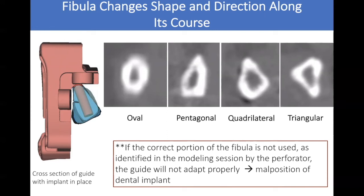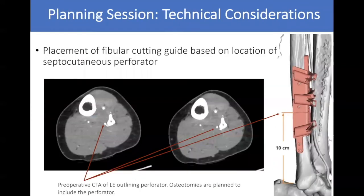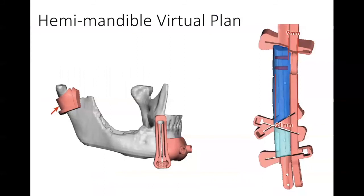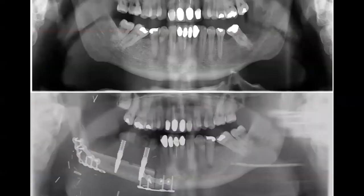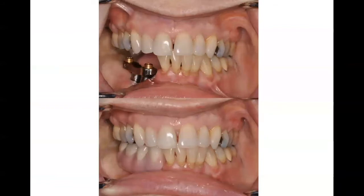To ensure we're using the correct portion of the fibula, preoperatively we assess the lower extremity anatomy with CT angiography and locate the perforators. On the fibula cutting guide, we place a hash mark to align with the perforator on the fibula flap so we know we're using the intended portion with the correct shape — ensuring the implant trajectory is correct and avoiding misfire into a different shape of fibula bone. An example shows two dental implants with cutting guides. Three to four weeks after surgery, we make two small openings in the skin island corresponding to the dental implants and unroof them for a fixed prosthesis replacing premolars and molars on the patient's lower right dentition.